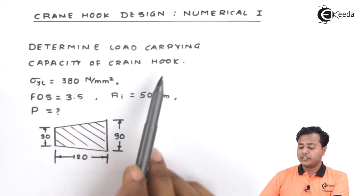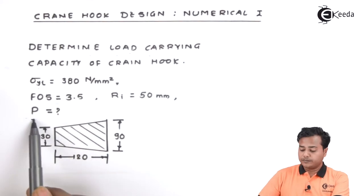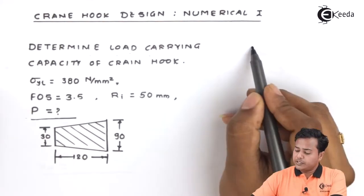We are supposed to find out the P, that is nothing but load carrying capacity of the crane hook. The schematic which is provided for this is: